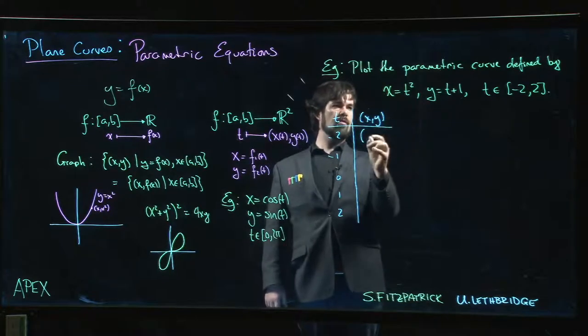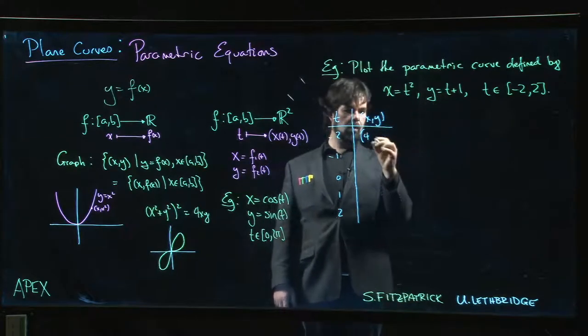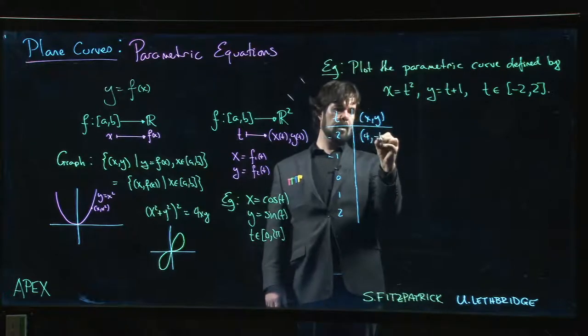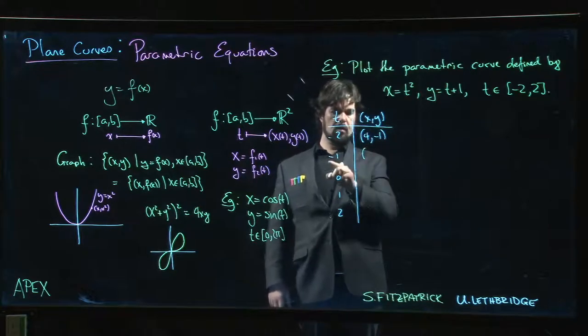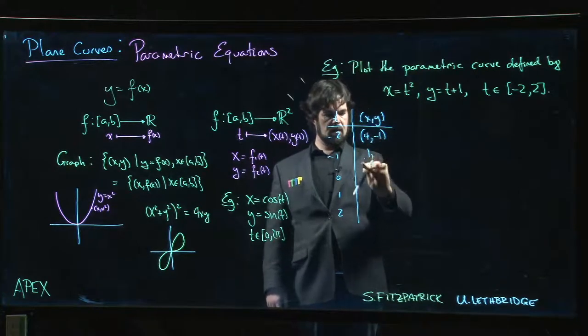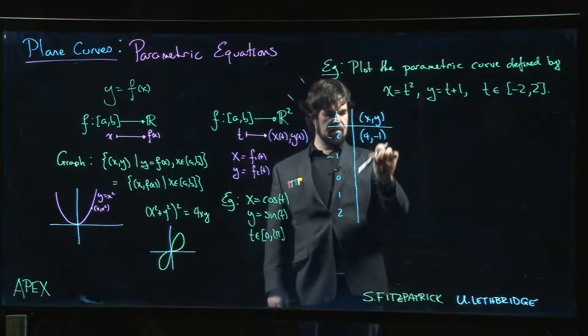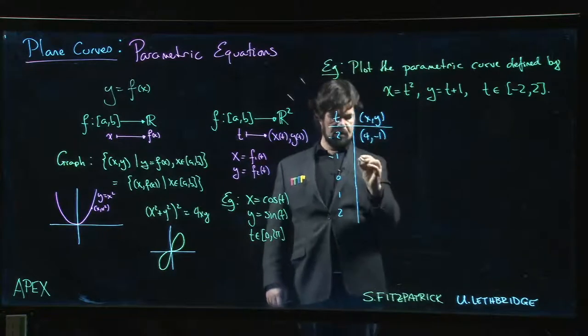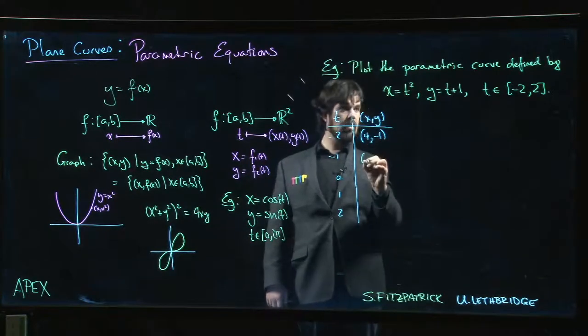We come over here: -2 squared is 4, -2 + 1 we get -1. Then -1 squared we get 1. Let me leave a little bit of room - I want to add maybe some non-integer samples in here in a minute. So here we're going to get 1.